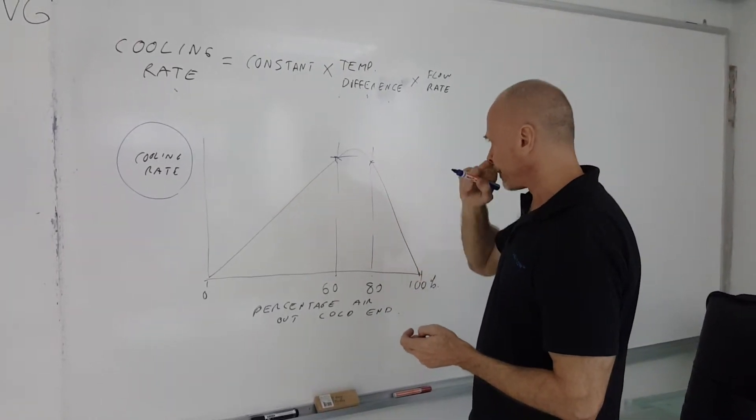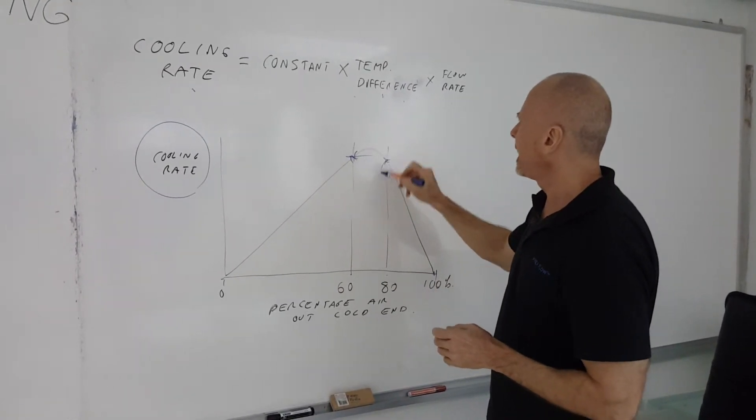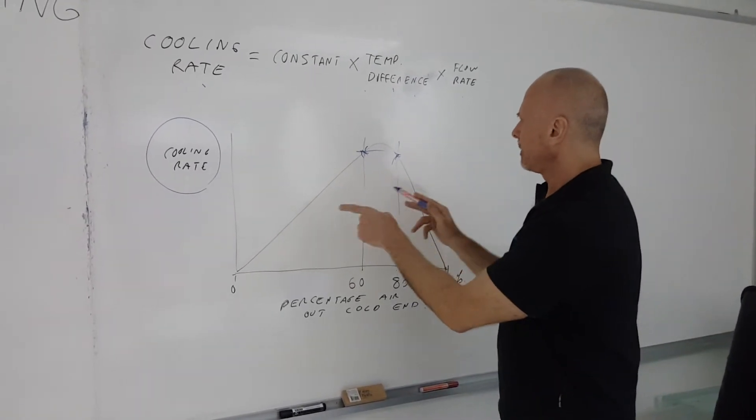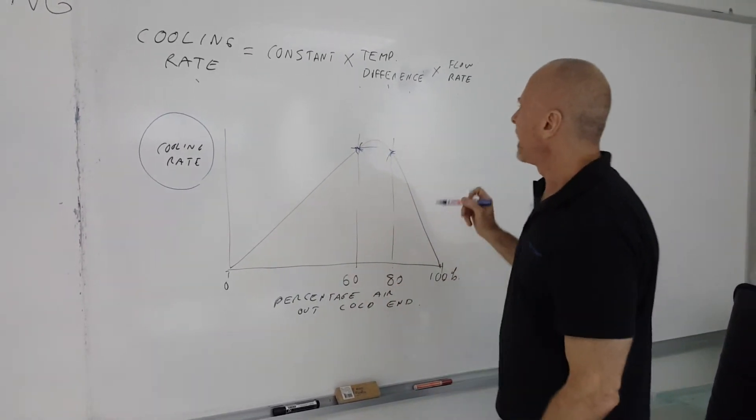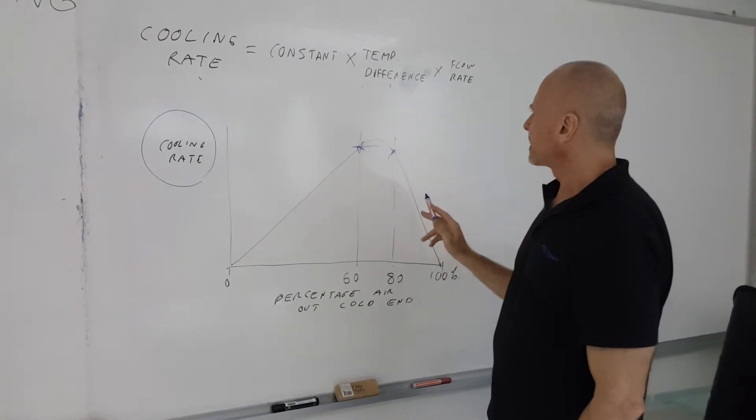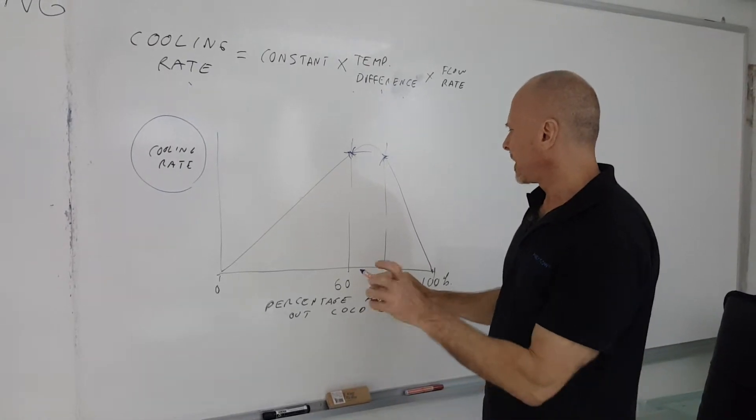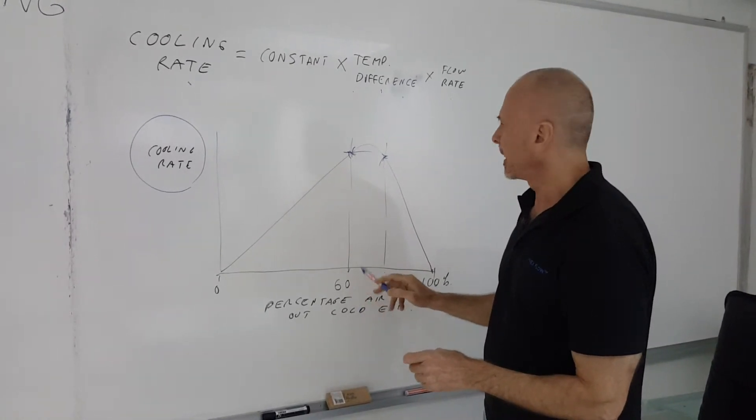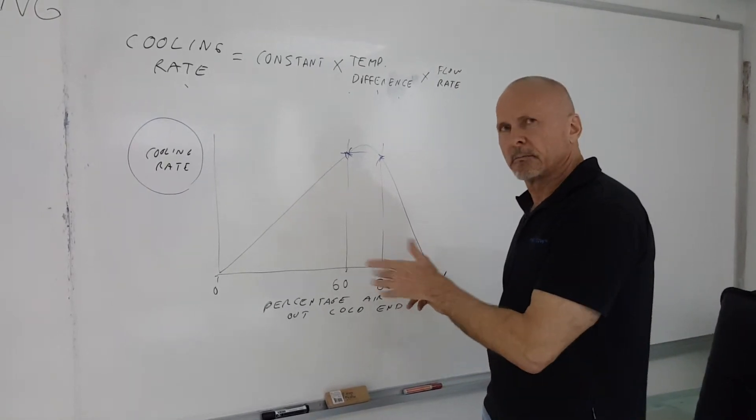Now, think about this. The best cooling rate was somewhere between 60 and 80%. And by the way, this can change too. This graph can wiggle. We found that if the reference temperature is very high, you're actually better off to have the percentage of the air off the cold end as something like 60%. If the temperature is cooler, you're actually better off to have it at the other end.